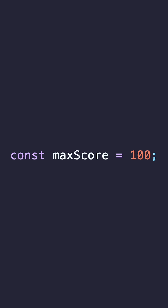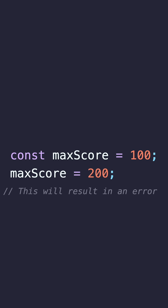Here's an example of declaring and assigning a variable with const. Once maxScore is assigned the value 100, it cannot be changed. Trying to reassign a value to a const variable will throw an error in your JavaScript console, as const variables are immutable.